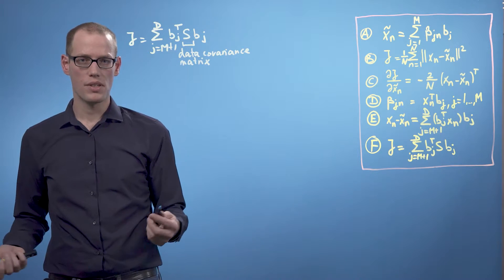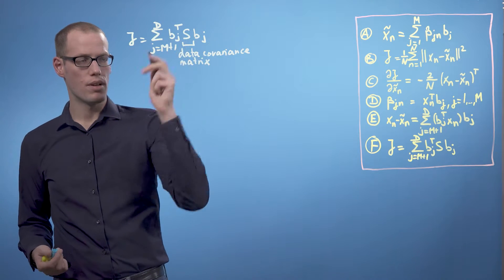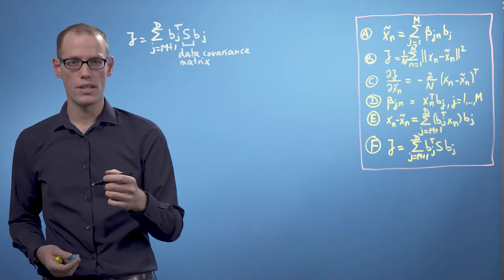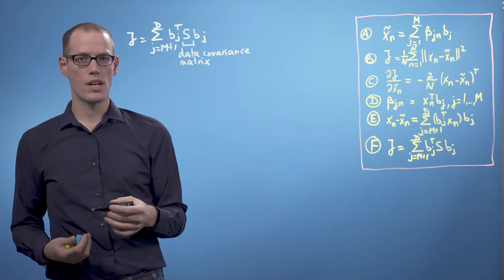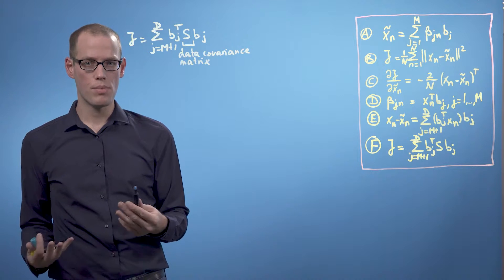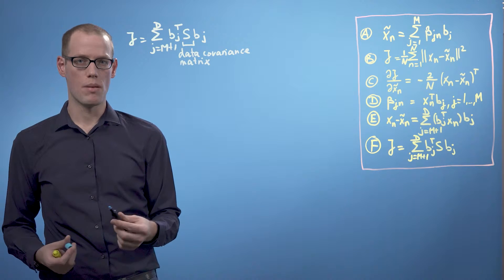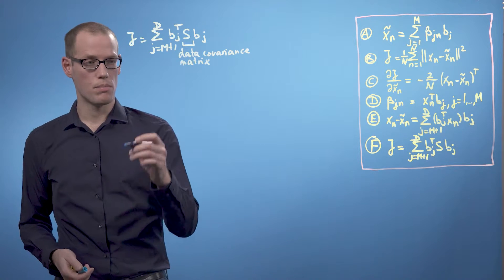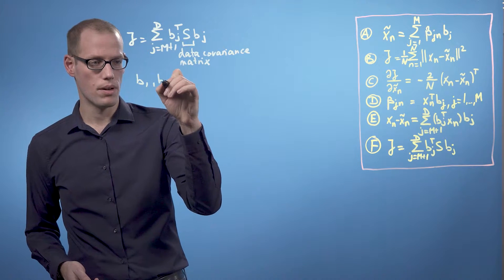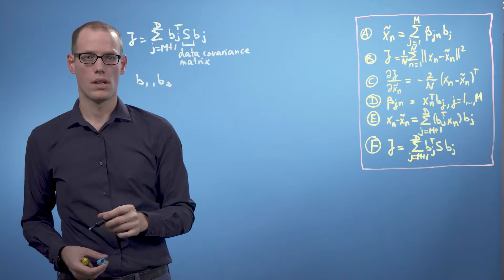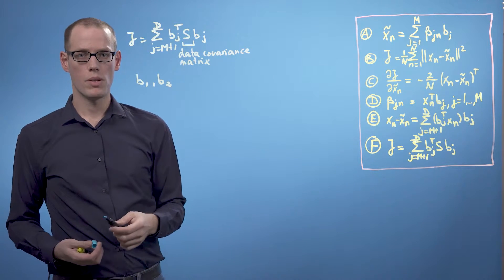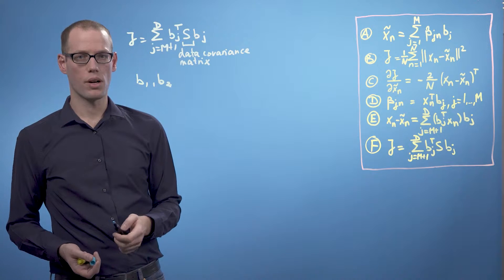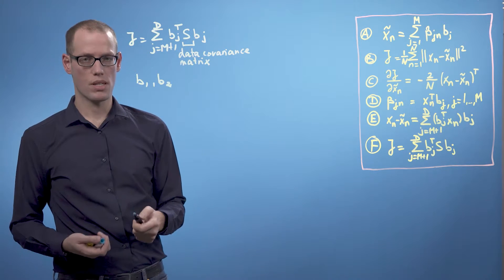Let us start with an example to determine the b vectors. We start in two dimensions, where we wish to find a one-dimensional subspace such that the variance of the data when projected onto that subspace is minimized. We are looking at two basis vectors, b1 and b2 in R². b1 will span the principal subspace and b2 its orthogonal complement — the subspace that we will ignore.